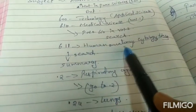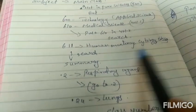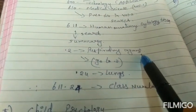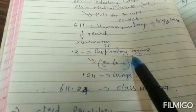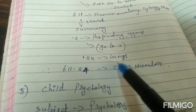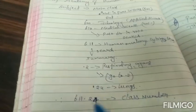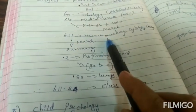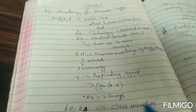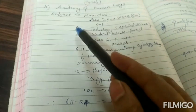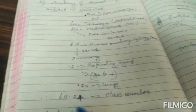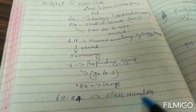Then you can find in sixth level human anatomy and cytology. Again you search in that summary 0.2, you can get respiratory organs. Why respiratory? Lungs are the respiratory organs. So inside this respiratory organ, in point 24 you can find lungs. So our main class is 611, that is human anatomy, dot 24 is the lungs. 611.24 is the class number.